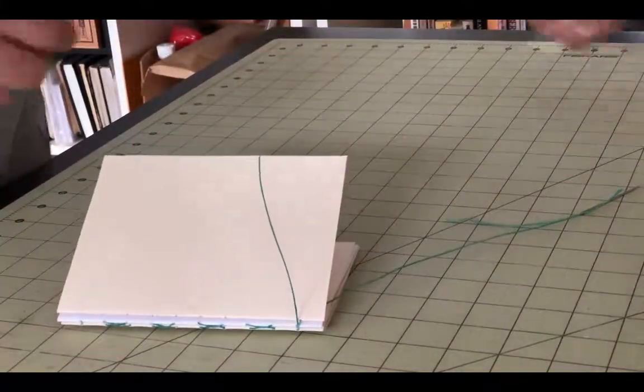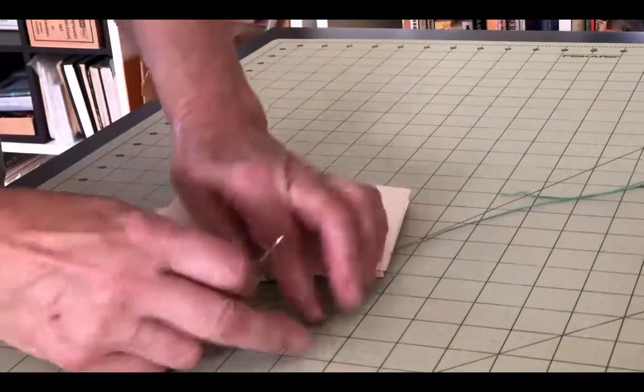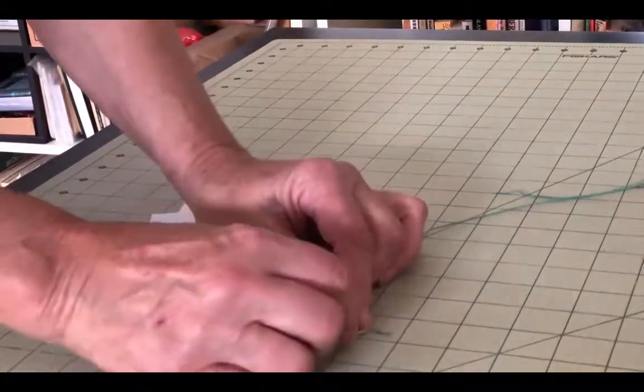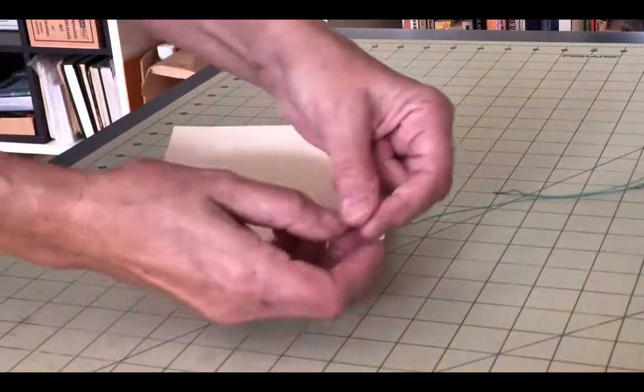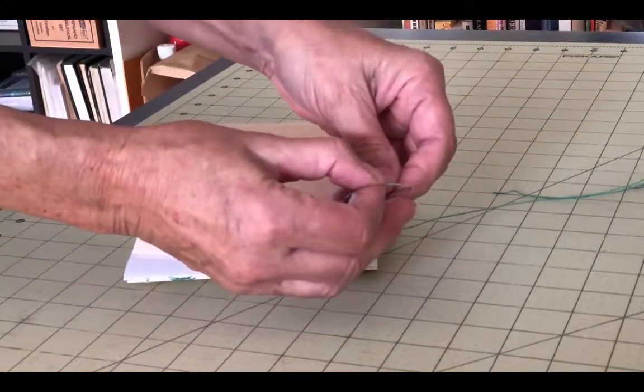Next, thread a needle onto that tail and sew back in through the same hole that it's coming out of. The thread you just wrapped around it will keep it from popping back inside.